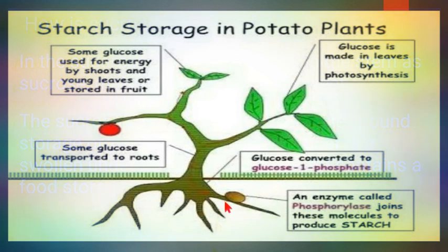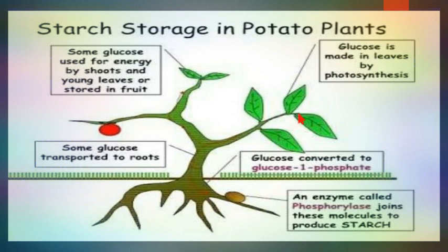Potato also contains starch. When glucose is produced in excess, it is stored in the form of starch — a polysaccharide made up of a long chain of glucose molecules. Glucose made in the leaves by photosynthesis — leaves being the food factory — is either used locally or transported elsewhere.